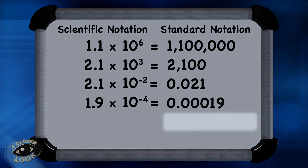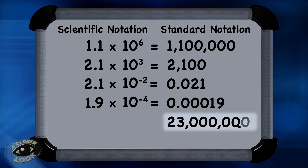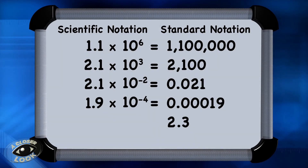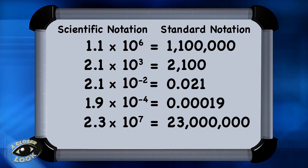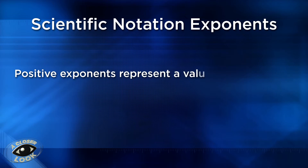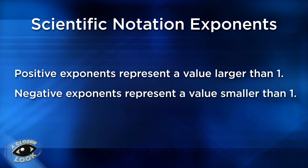The last example is 23 million. When you start off with 23 million, there's an understood decimal here. Move it 1, 2, 3, 4, 5, 6, 7 places, so that will be 2.3. The decimal moved 7 places, and this is representing a large value, so once we convert it to scientific notation, it will have a positive exponent. Remember, any time you have a positive exponent in scientific notation, you are representing a value larger than 1. And any time you have a negative exponent, that represents a number smaller than 1.